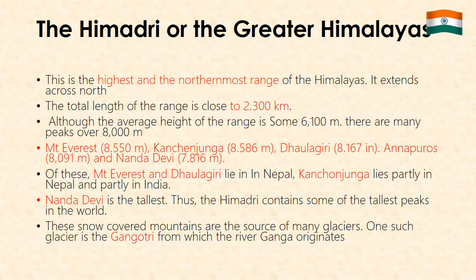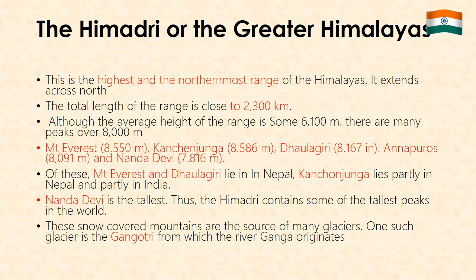The Himadri, or the Greater Himalayas, is the highest and the northernmost range of the Himalayas. It extends across North India from the northwest to the southeast. The total length of the range is close to 2,300 km, and the average height of the range is 6,100 m. There are many peaks over 8,000 m, including Mount Everest (8,850 m), Kanchenjunga (8,586 m), Dhaulagiri (8,167 m), Annapurna (8,091 m) and Nanda Devi (7,816 m). Of these, Mount Everest and Dhaulagiri lie in Nepal, Kanchenjunga lies partially in Nepal and partially in India, and of the peaks that lie completely in India, Nanda Devi is the tallest. Thus, the Himadri contains some of the tallest peaks in the world.